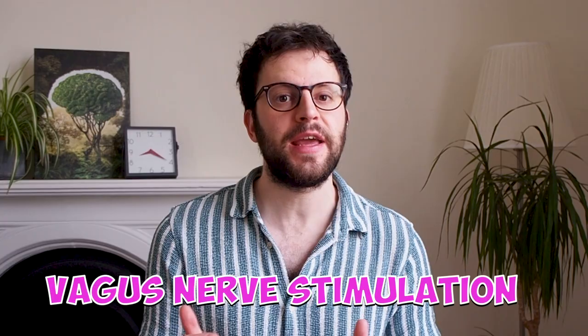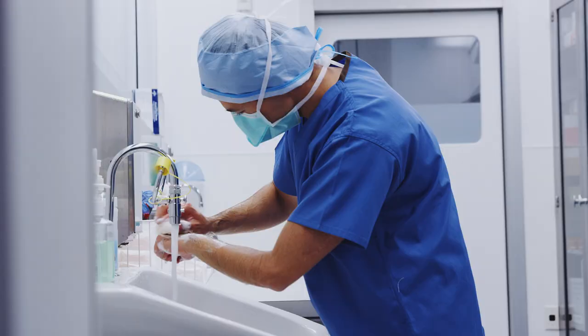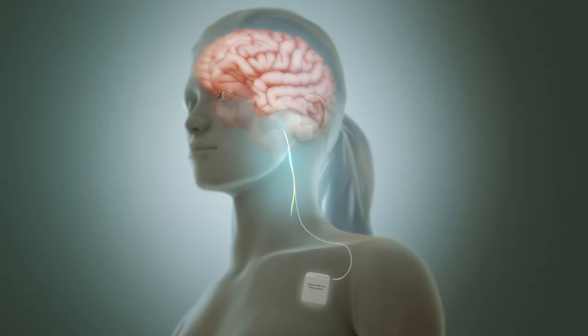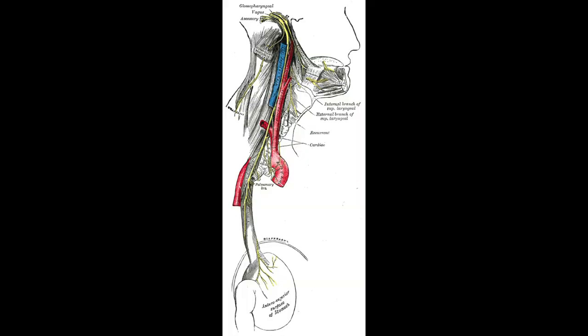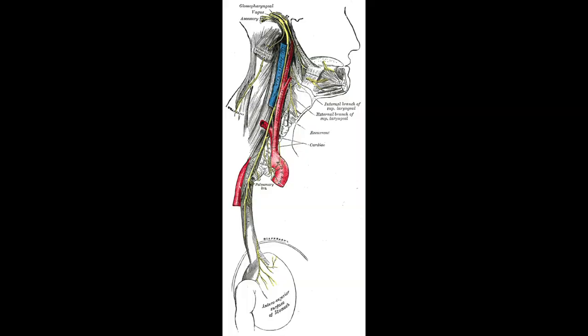If drug treatments fail, then something called vagus nerve stimulation or VNS can be considered. This involves implanting a small device under the skin of the chest that sends electrical impulses to the vagus nerve. The vagus nerve runs from the brain stem through the neck and into the chest and abdomen. VNS can help to reduce the frequency and severity of seizures in some people who haven't responded well to medications, though whilst generally safe and well tolerated, it's not effective for everyone.